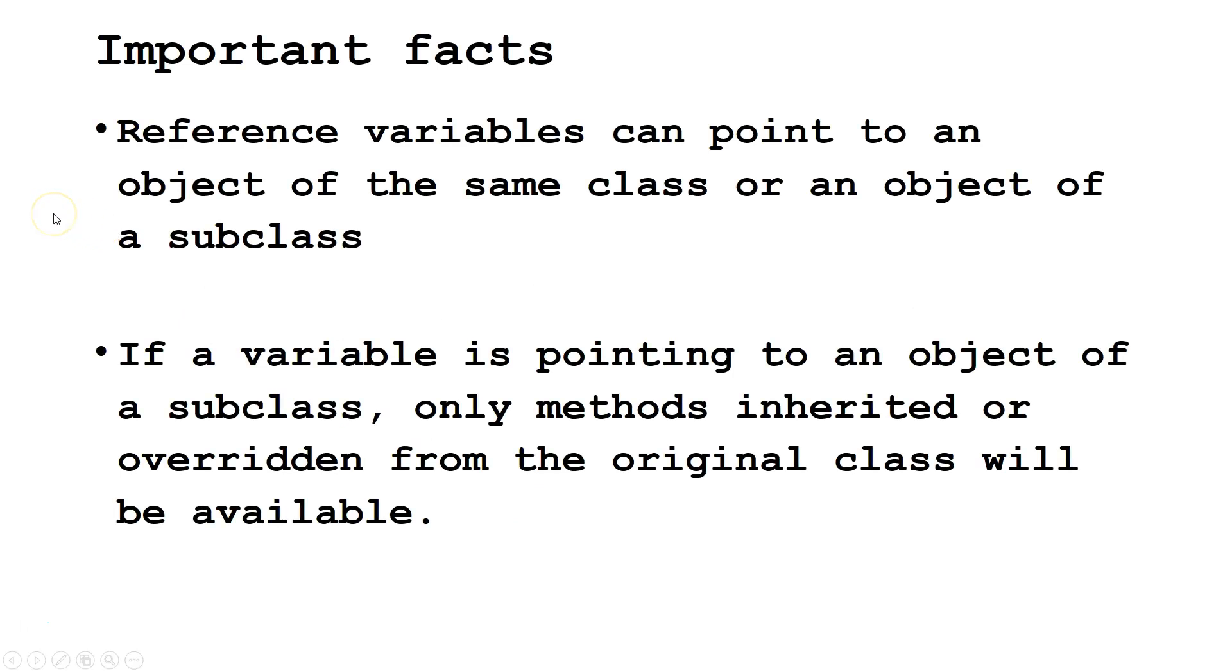Two things to know about polymorphism. First, reference variables can point to an object of the same class or an object of a subclass. Second, if a variable is pointing to an object of a subclass, only methods inherited or overridden from the original class will be available. We'll talk more about this later.